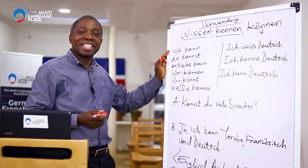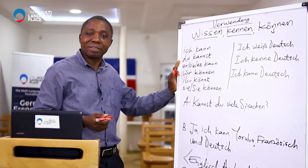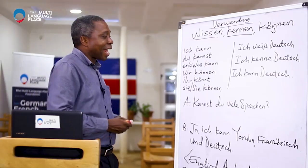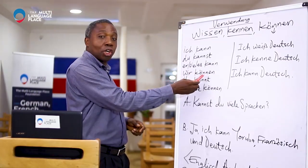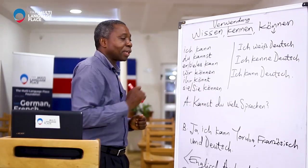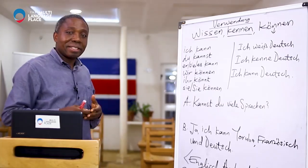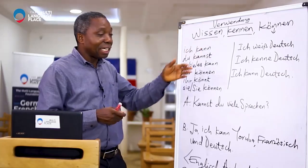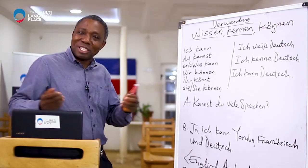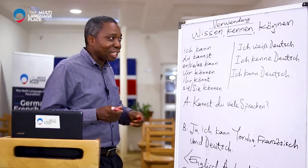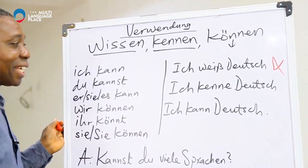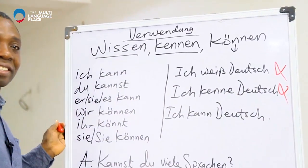Here is the conjugation. 'Wissen' means to know, and 'kennen' means to know. But if you want to say 'I know how to speak German,' you will not use either of the two. There is nothing like that in German — that is the right sentence.